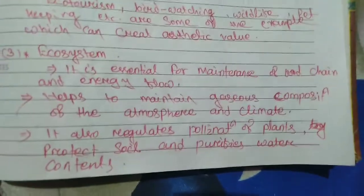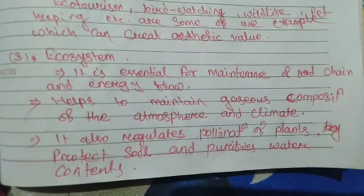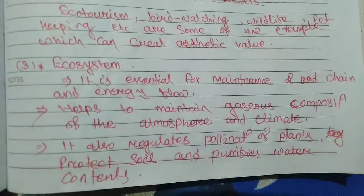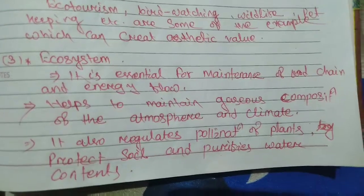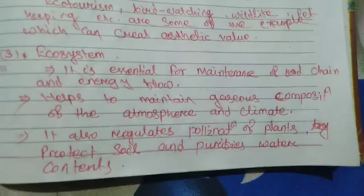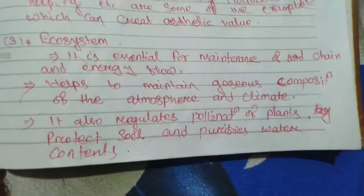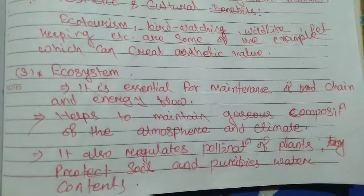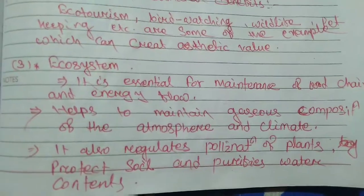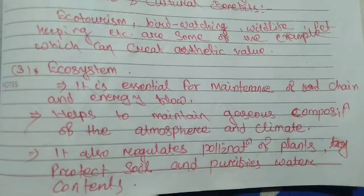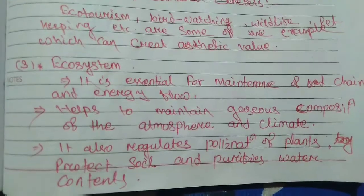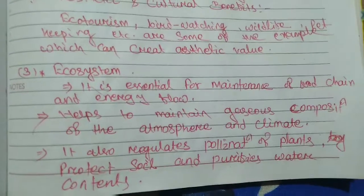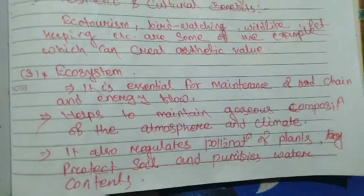The ecosystem is essential for the maintenance of food chain and energy flow. It helps maintain the environment and population balance, as energy flows step-wise. Biodiversity helps maintain the gaseous composition of the atmosphere and climate. It also regulates pollination of plants, protects the soil, and purifies water.